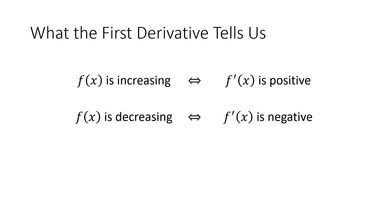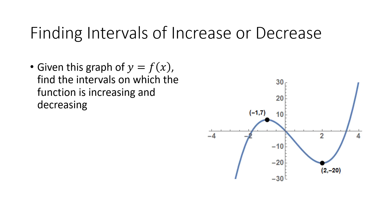The first derivative is going to tell us that when the derivative is positive, the function is increasing. When the derivative is negative, the function is decreasing. So if we're looking at this graph, we want to look at where the derivative is positive and where it is negative if we're trying to figure out where the function is increasing and decreasing.